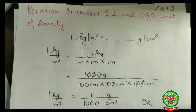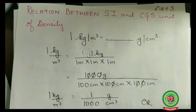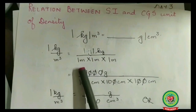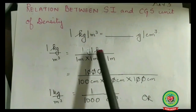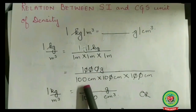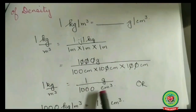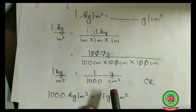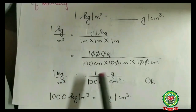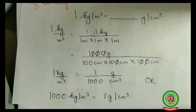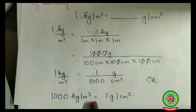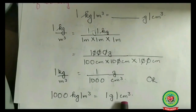Next topic: relation between SI and CGS unit of density. SI unit is kg per meter cube; CGS unit is gram per centimeter cube. Derivation: 1 kg/m³ = 1 kg / (1 m × 1 m × 1 m). Since 1 kg = 1000 g and 1 m = 100 cm, substituting and simplifying gives 1 kg/m³ = 1/1000 gram per centimeter cube. Therefore, 1000 kg/m³ = 1 g/cm³.